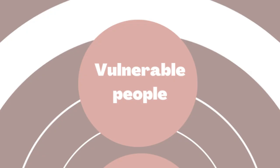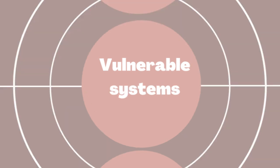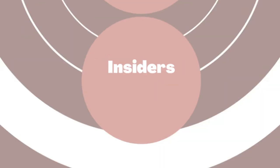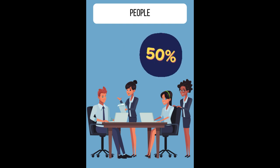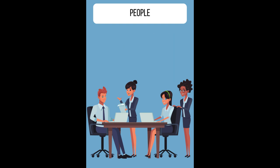Who do adversaries target? Adversaries target vulnerable people, vulnerable systems, and utilize insiders to attack vulnerable populations. Attackers pick vulnerable people because people are the weakest link. Over 50% of data loss is from social engineering, which is a tactic used by attackers directly against people.